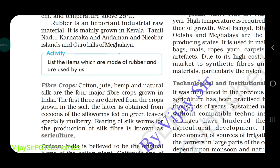Next is fiber crops. Fiber crops include cotton, jute, hemp, and natural silk — the four major fiber crops grown in India. The first three are derived from crops grown in the soil, and the latter is obtained from the cocoons of the silkworm.